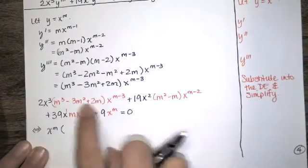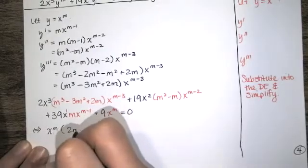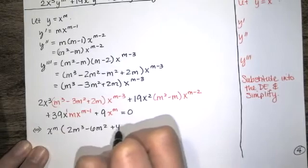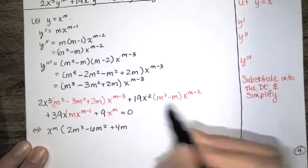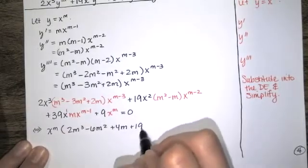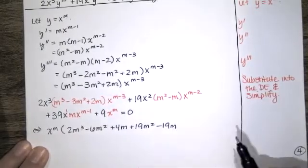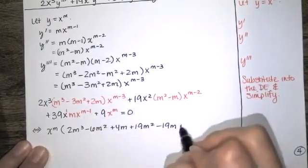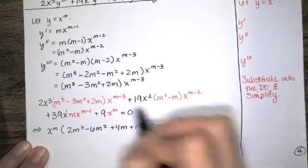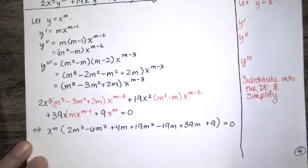So we have 2 times the cubic polynomial — I'll distribute that 2 now. Then we've got 19 times that polynomial, and then 39m from the first-derivative term, and a 9 from the y term. That's equal to 0.